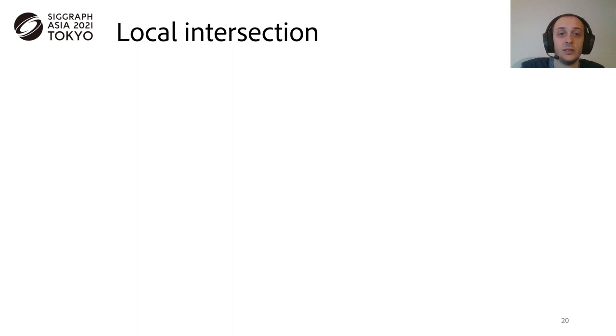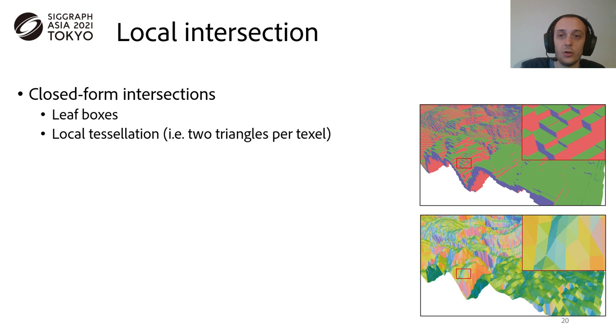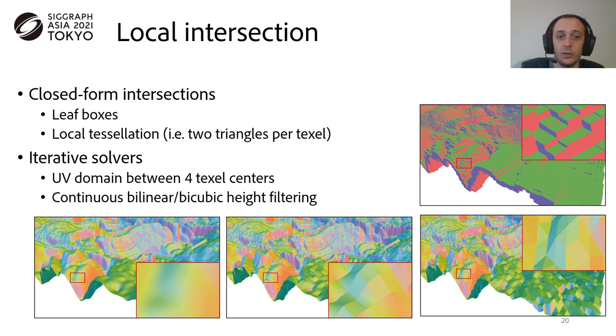The previous traversal gives access to the relevant texels that might produce an intersection. So we propose a range of local intersectors with different quality-speed trade-offs. The fastest ones are the closed-form intersections, obtained for example by simply considering the leaf boxes, or by doing a local tessellation, by example generating two triangles per texel. Also, since at that scale our UV domain is between four texel centers, we can also consider continuous height sampling, such as bilinear or bicubic height filtering. Unfortunately, the intersection in that case can only be found using an iterative solver, such as Newton's method.